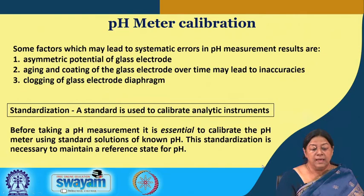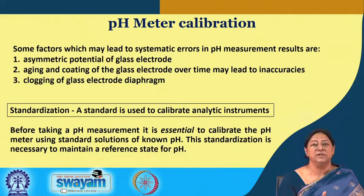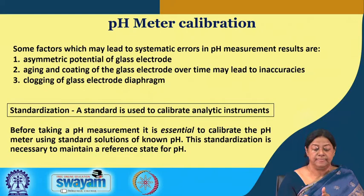Factors that can lead to improper pH measurements include the glass electrode not being stored properly, the glass electrode being old or having a coating on it, and clogging of the glass electrode diaphragm. These prevent measurement of the change in hydrogen ion concentration and therefore a change in pH.